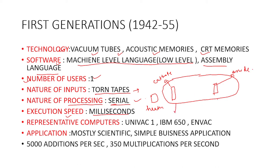Both cathode and anode are connected to a power supply. The heater heats the cathode, which releases free electrons into the vacuum. Those electrons move towards the anode because there is no charge in the vacuum. The flow of electrons is called current. This is how current flows in the vacuum tube.